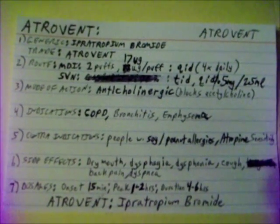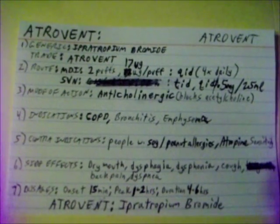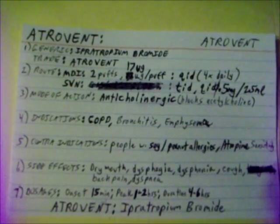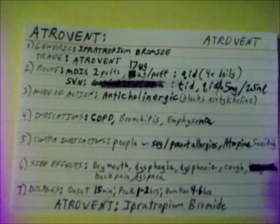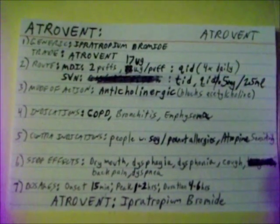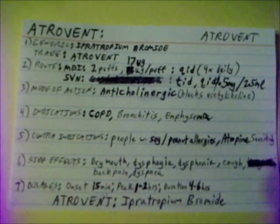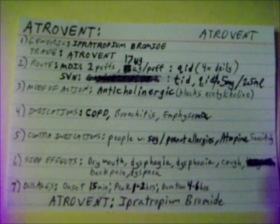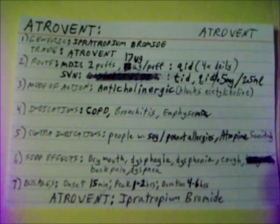Atrovent is also given via small volume nebulizer, TID — 3 times daily — or QID — 4 times daily — in a solution of 0.5 mg per 2.5 mL. Atrovent is an anticholinergic which blocks acetylcholine, used for COPD including bronchitis and emphysema.